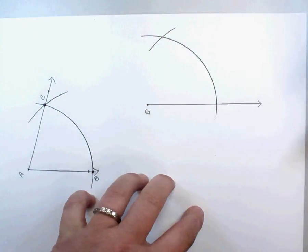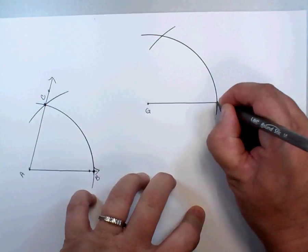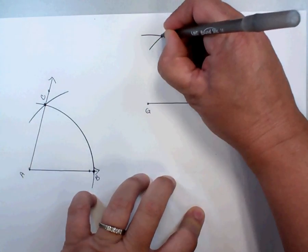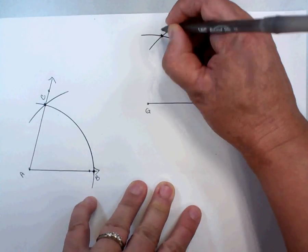And we're going to label this intersection H and we're going to label this intersection F.